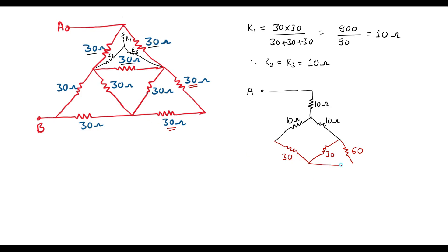So here we have 60 ohms connected to this node. Now here we have 30 and here we have 30. This 30 is connected as it is. This is 30, and here we have node B. Now in this circuit we can observe that this 30 and this 60 are in parallel, and we can replace these two with a single value. Again here we can see that 30-ohm, 30-ohm, 30-ohm are in a delta fashion, which we can convert into star.